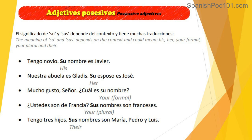'Ustedes son de Francia. Sus nombres son franceses.' With 'ustedes' as context, we know 'sus nombres' means 'your names.' Your names are French. Finally: 'Tengo tres hijos. Sus nombres son María, Pedro y Luis.' Since we're talking about 'I have three kids' and now naming them, 'sus' means 'their' — their names are María, Pedro, and Luis.